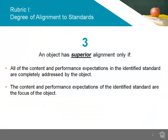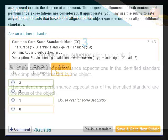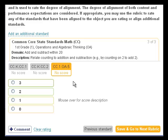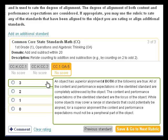An object has superior alignment if all content and performance expectations in the standard are addressed completely in the object, and if the content and performance expectations are the focus of the object. Superior aligned standards should not be a peripheral part of the object and deserve a 3 rating.